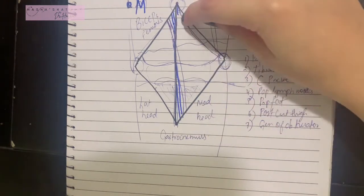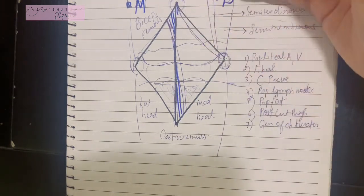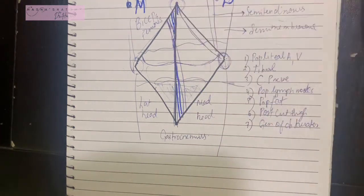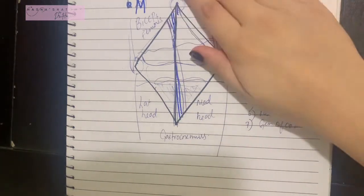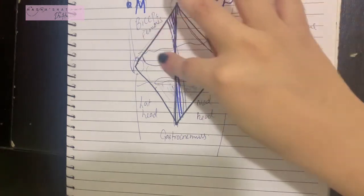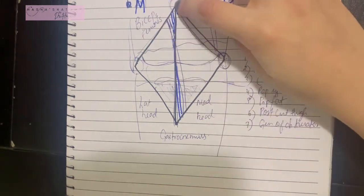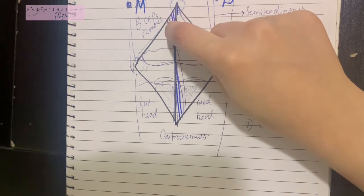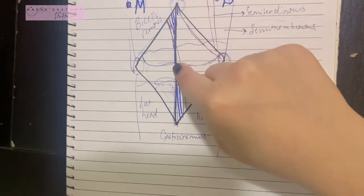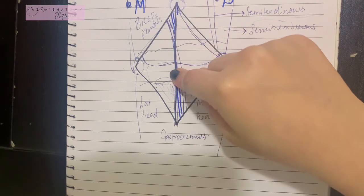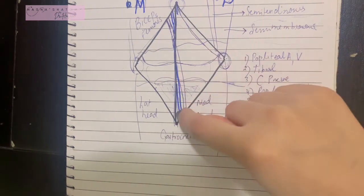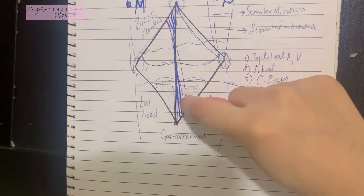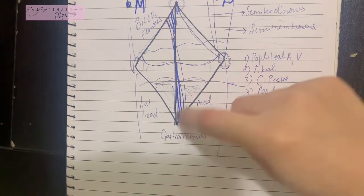To summarize: in terms of depth, the most superficial is the tibial nerve, then the vein, then the popliteal artery deepest. For medial-to-lateral in the upper fossa, the tibial nerve is most lateral, the popliteal vein is next, and the popliteal artery is most medial. In the middle they align. In the lower fossa, the tibial nerve is most medial, the vein is in between, and the popliteal artery is most lateral.